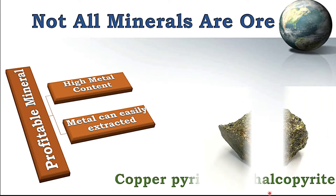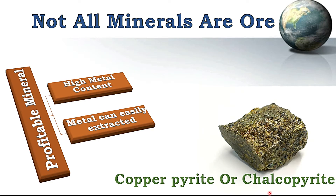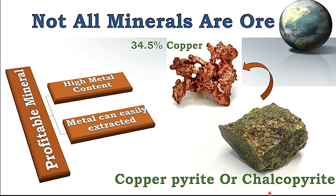For example, copper pyrite or chalcopyrite is a copper ore used for extracting copper, because it gives 34.5% pure copper and extracting this copper from copper pyrite ore is a very simple and cheap method. So only profitable minerals can be used as ore.